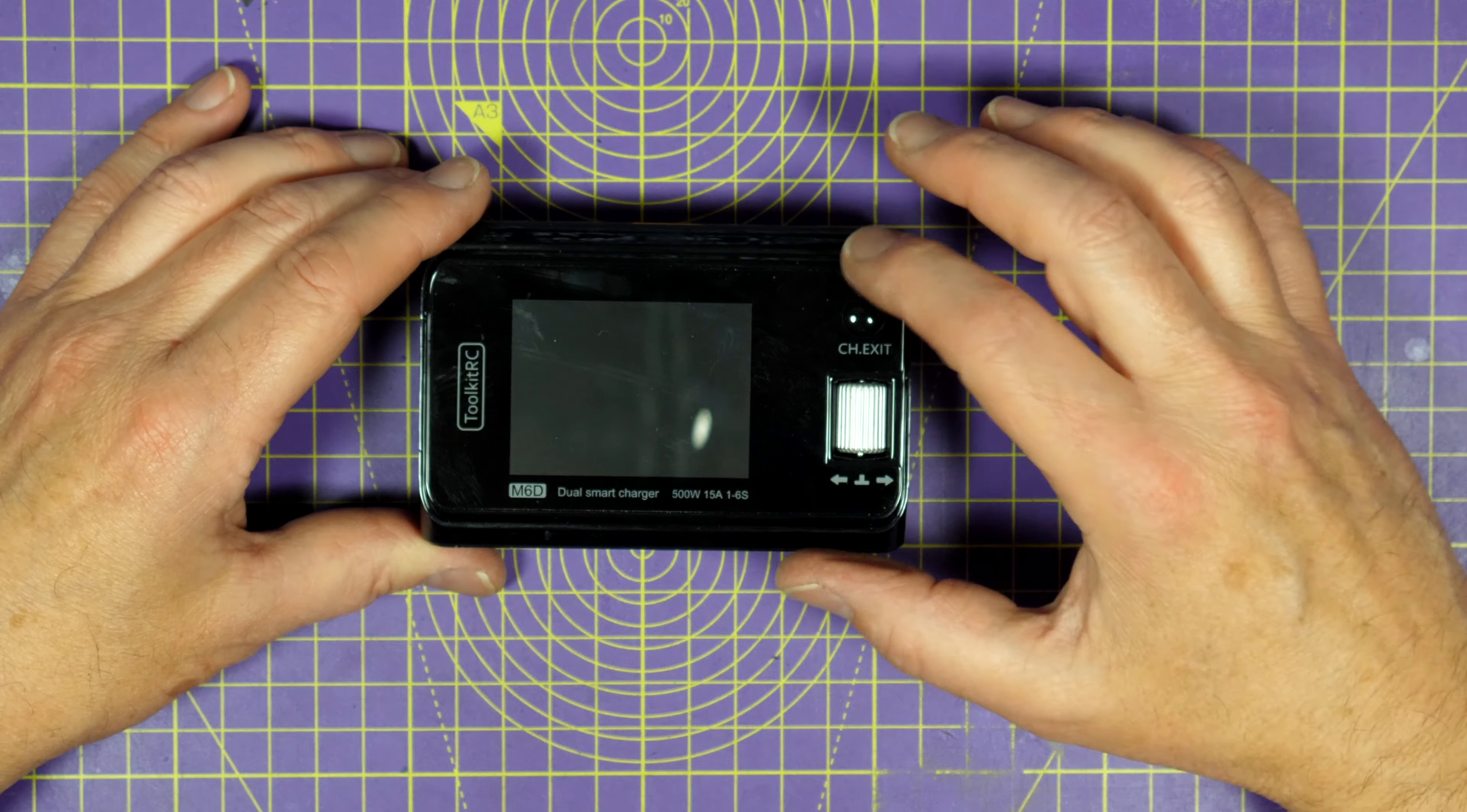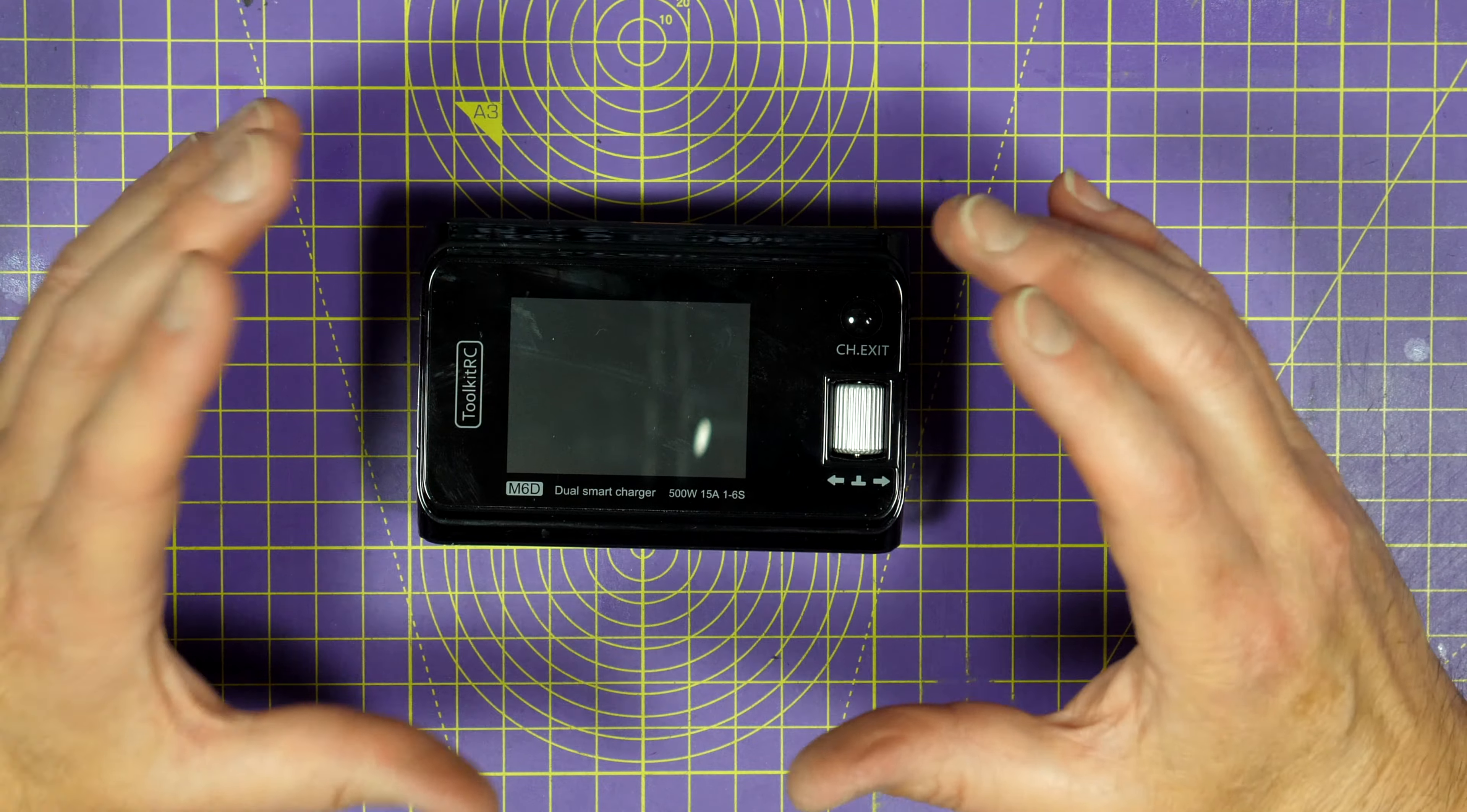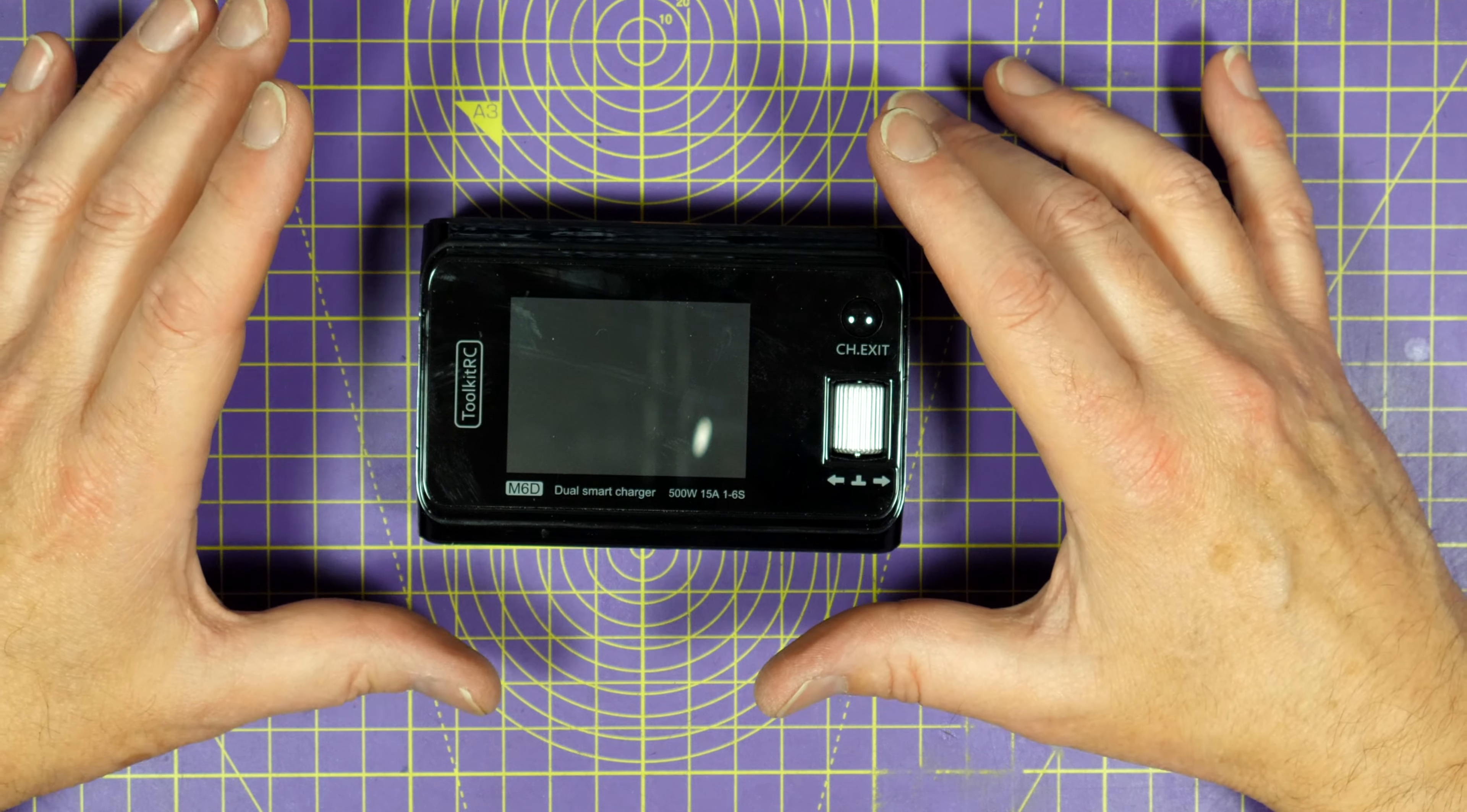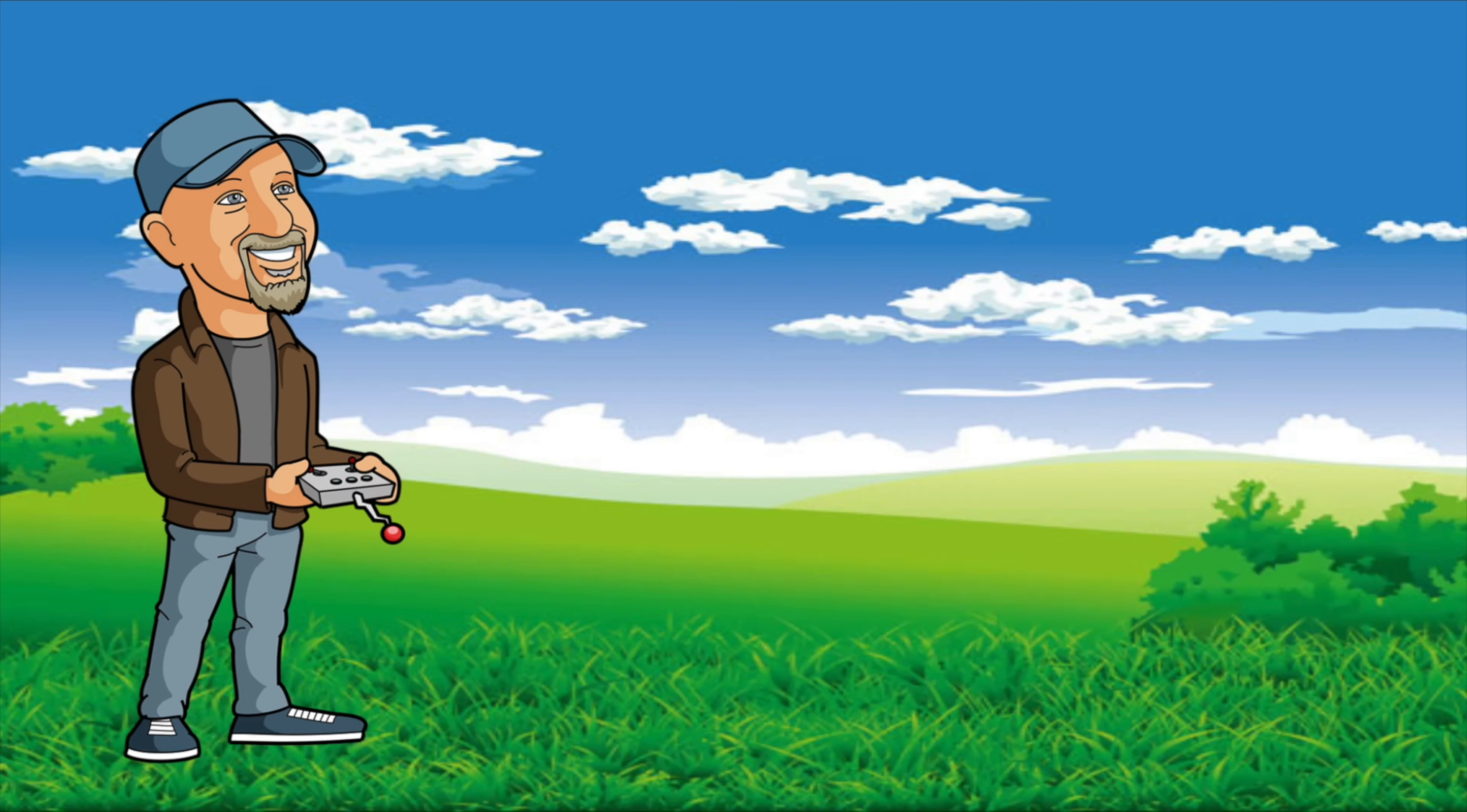Toolkit RC have just released this M6D. It's the dual version of the M6 and if you're in the market for a portable charger you can use out in the field that doubles as a very capable desktop charger, I think this is the one that you should consider. Hello and welcome to the early world channel.